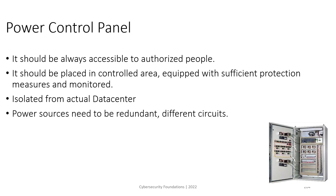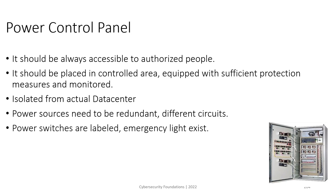Power sources need to be redundant — we need power from different circuits so if one circuit fails, another is working. Power switches in the panel should be properly labeled and documented. You should have a diagram or plan that explains to the team how power is provided to the different racks in the data center. You should also have emergency lighting.